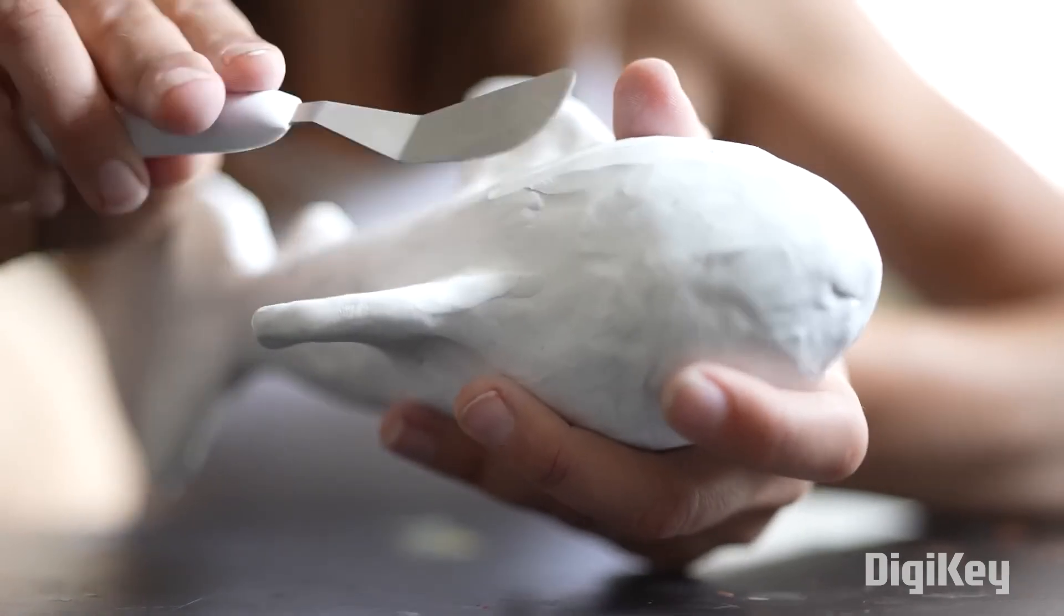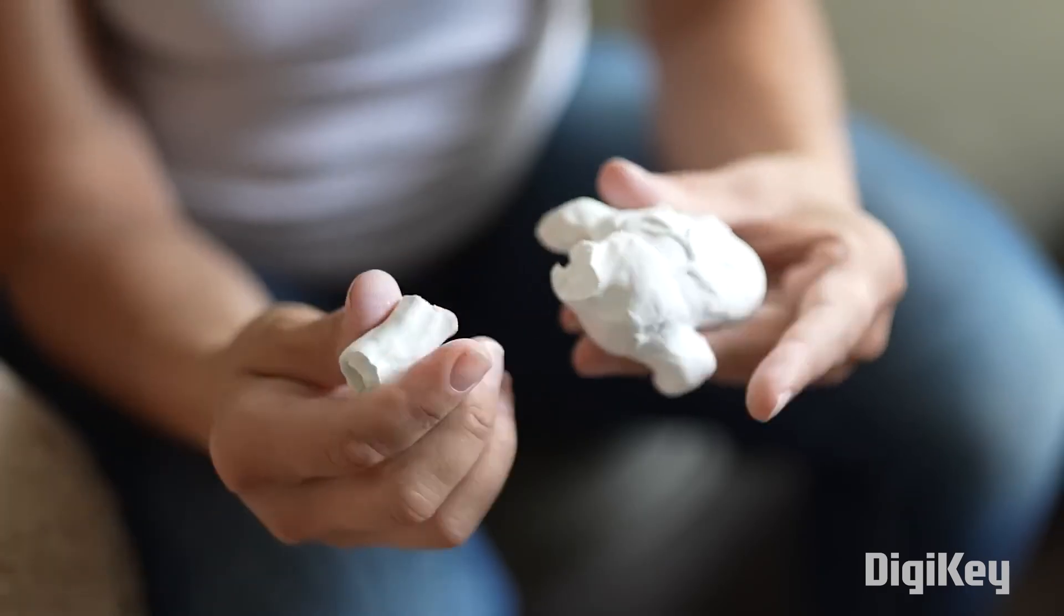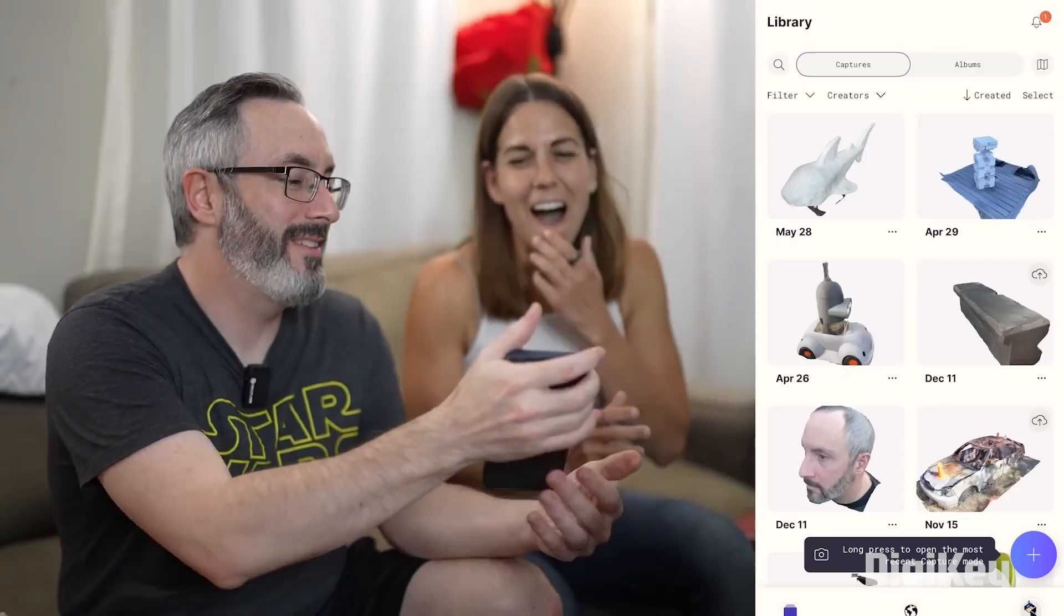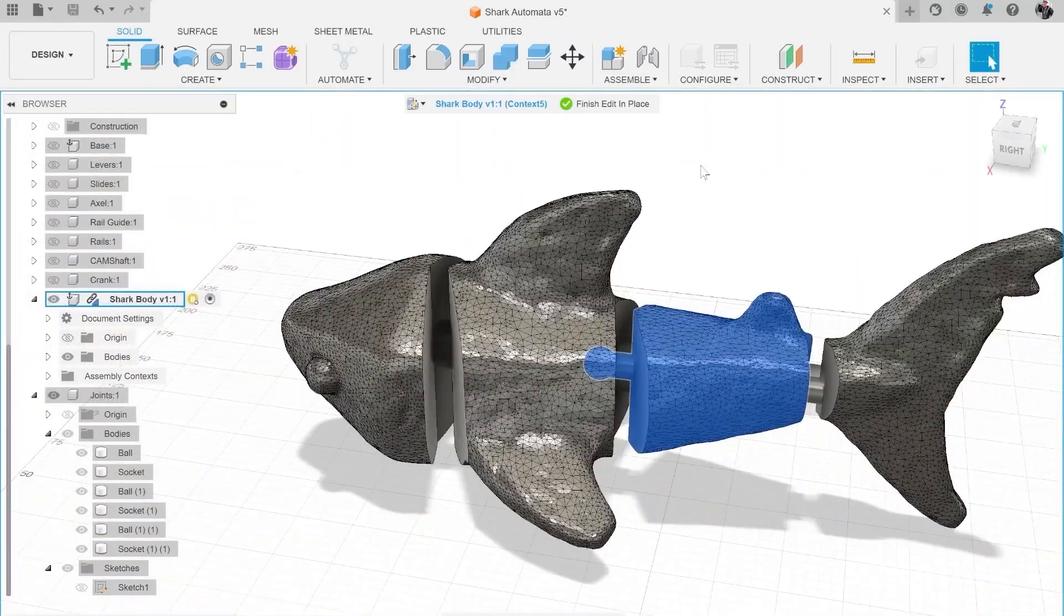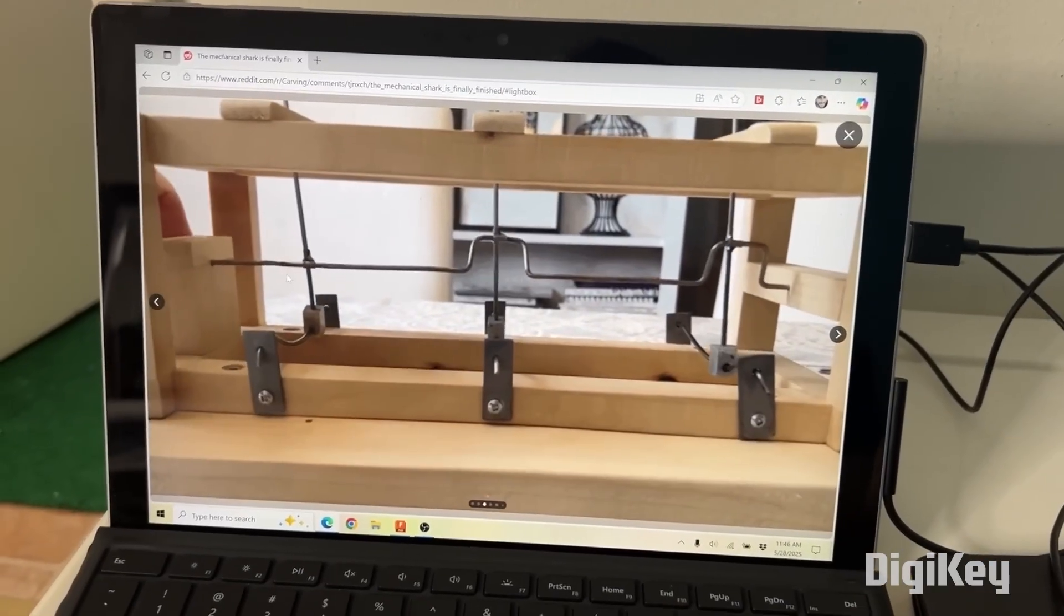The shark begins as a sculpture in clay that's 3D scanned using photogrammetry, so that Bill can add the mechanical bits to make the shark swim. Bill is plenty present in this video, but he also has his own video covering his part of the process.